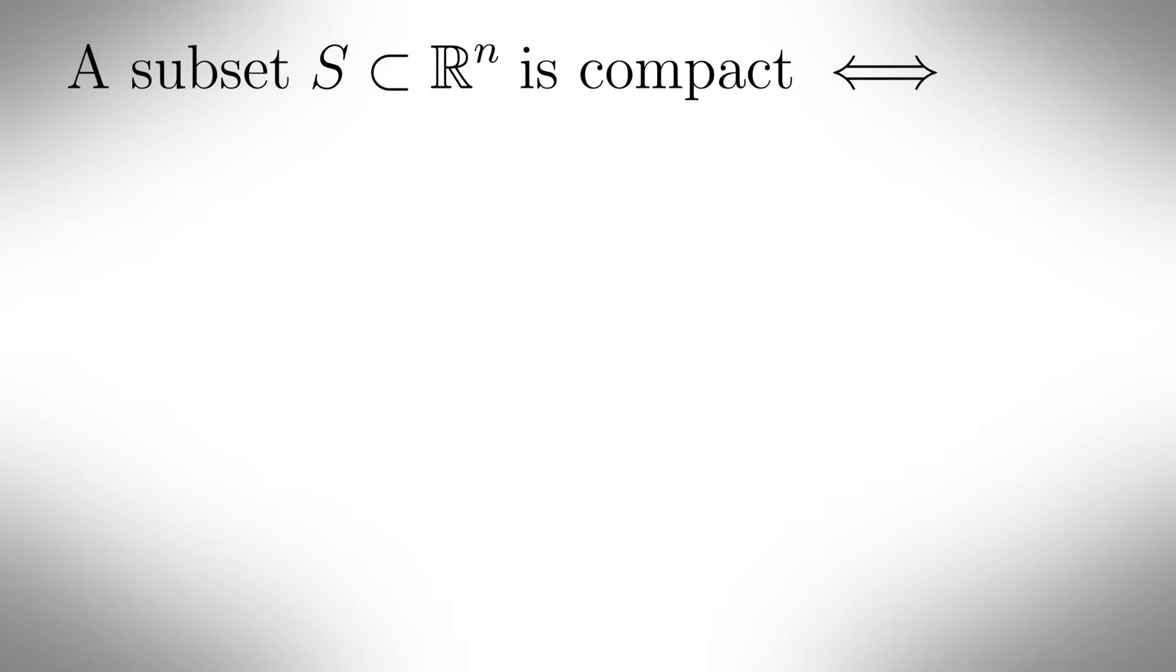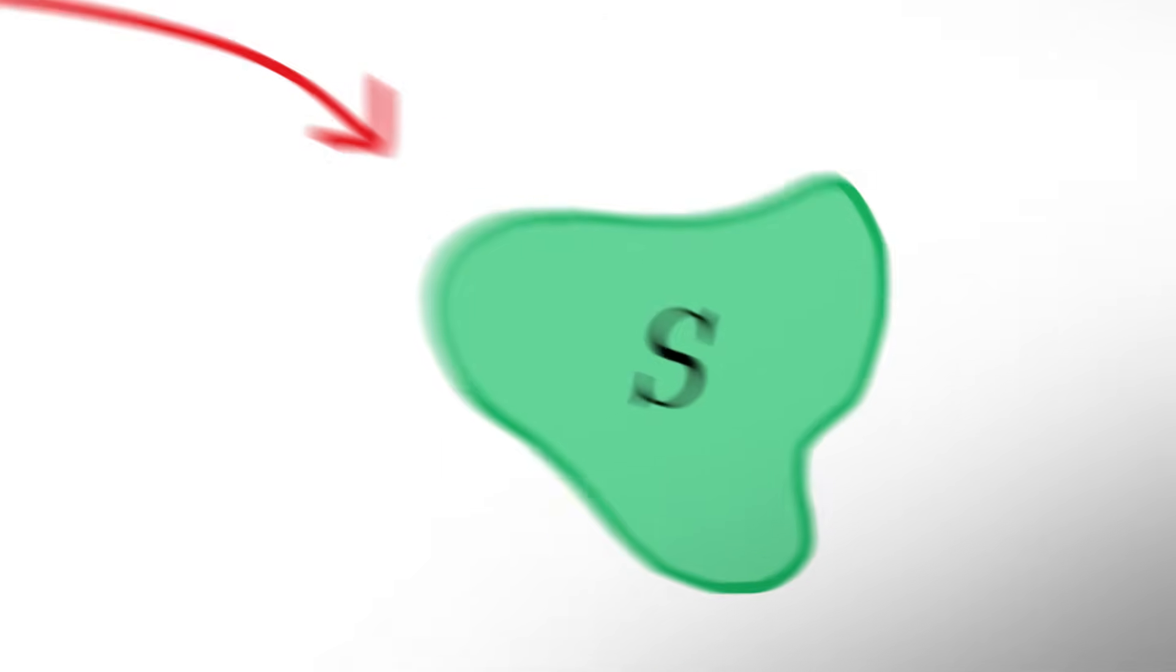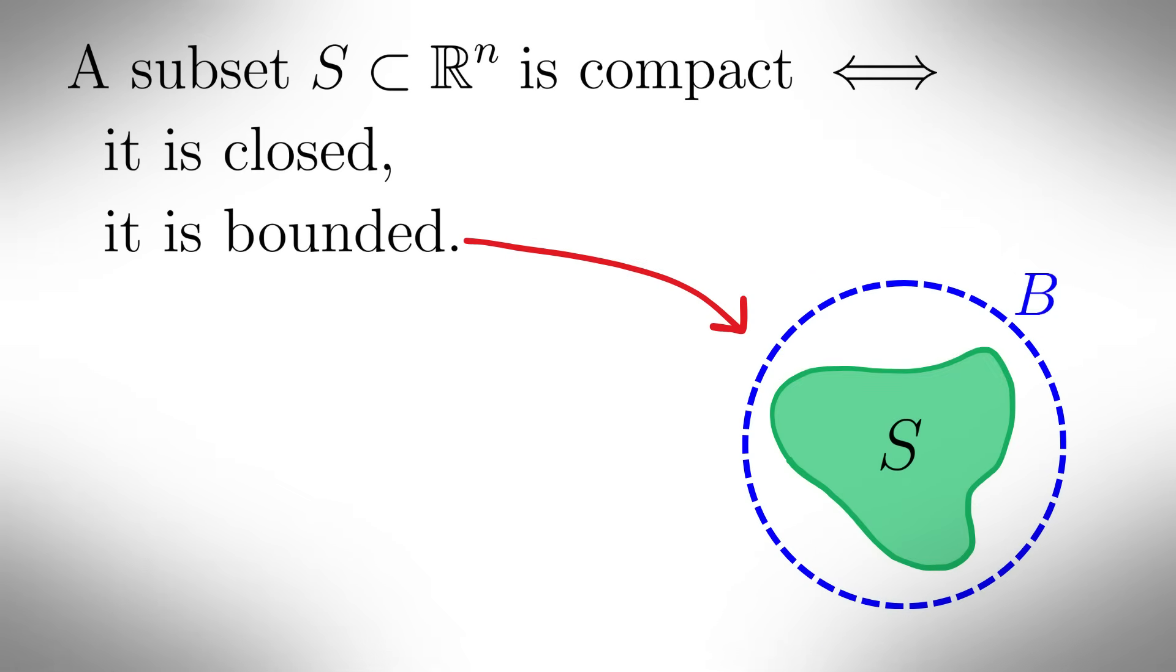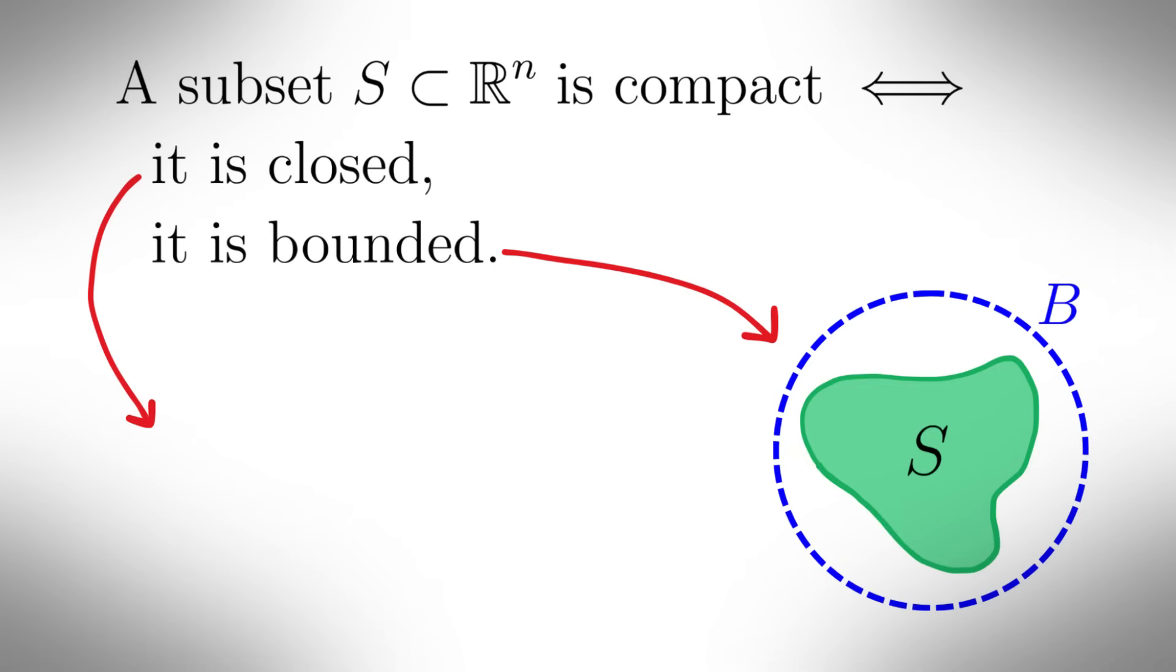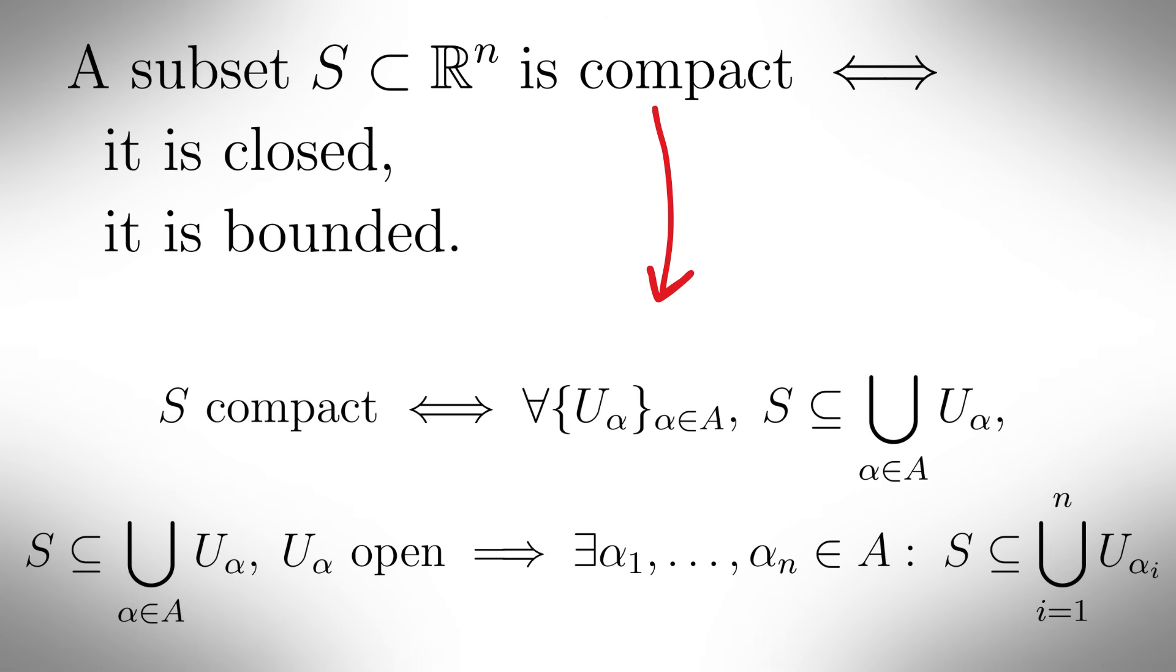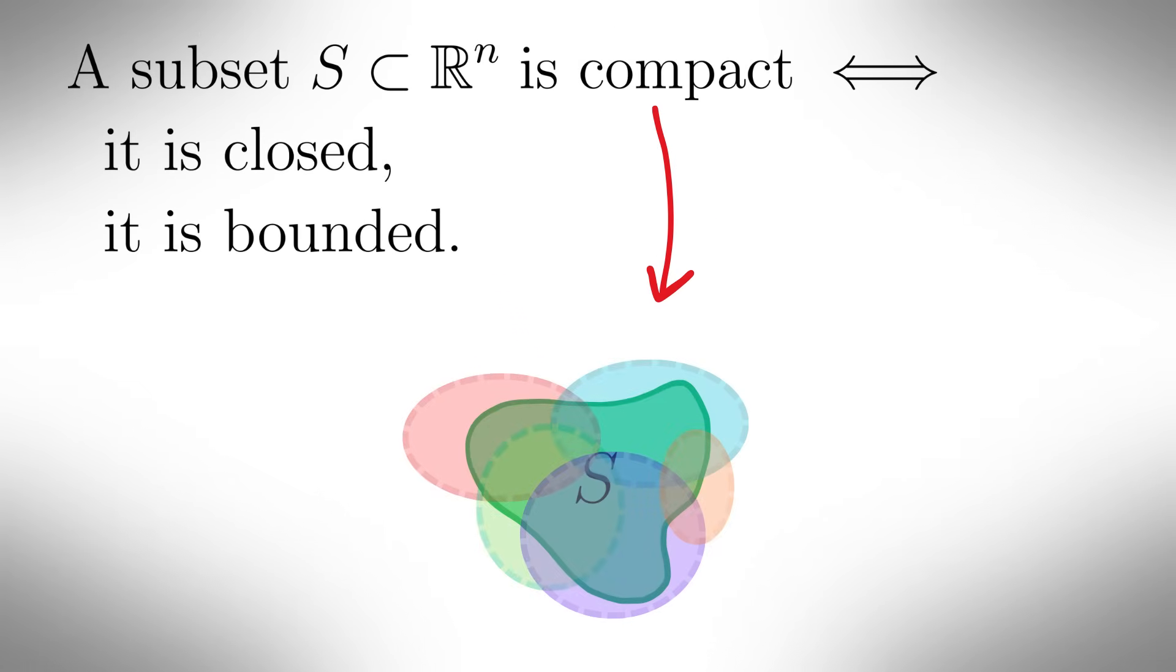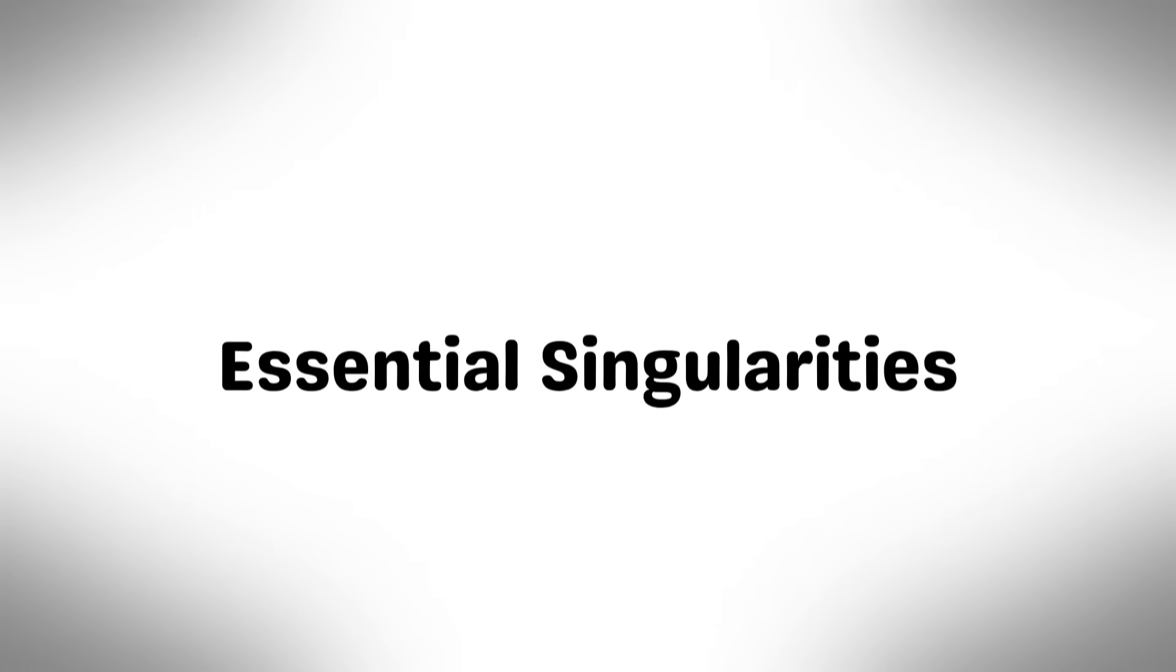Heine-Borel theorem. A subset s, which is a subset of the reals to the power n, is compact if and only if it is a closed and bounded set. A set being bounded means that it fits inside some big ball in Euclidean space, and the set being closed means that it contains all the boundary points, and the set being compact means that every open cover of s has a finite subcover. So this means no matter how you try to cover s with open sets, you can do it with only finitely many.